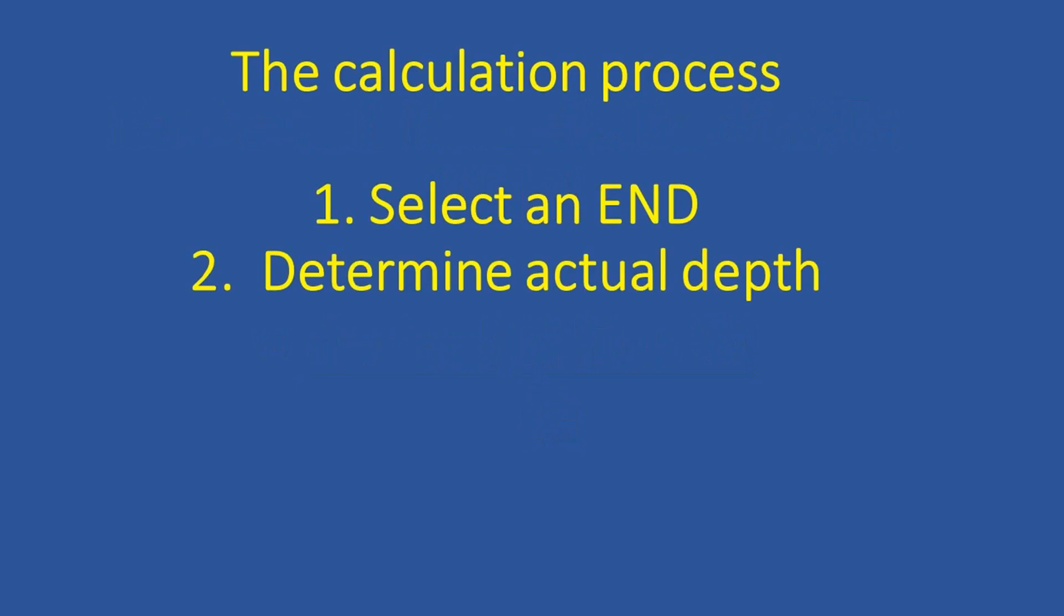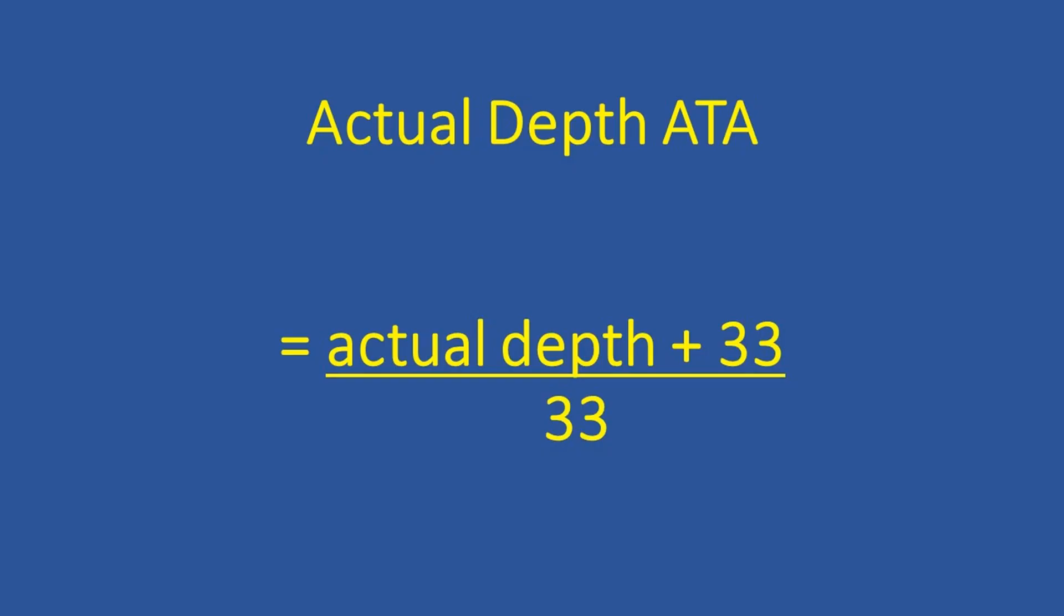Next we need to determine the actual depth that we're going to be looking at for the dive. Once we've determined the actual depth, we're going to calculate the actual depth atmosphere absolute. So to calculate the actual depth atmospheres absolute, you're going to take the actual depth that you're going to be doing the dive at, add 33 to it, and then divide the whole thing by 33.